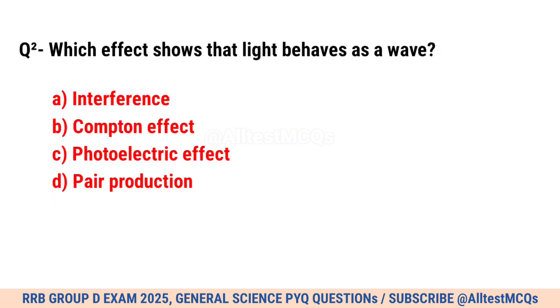Question No. 2. Which effect shows that light behaves as a wave? Correct option is A. Interference.